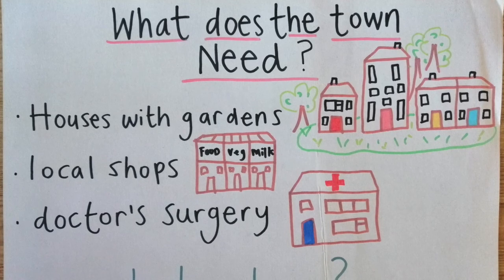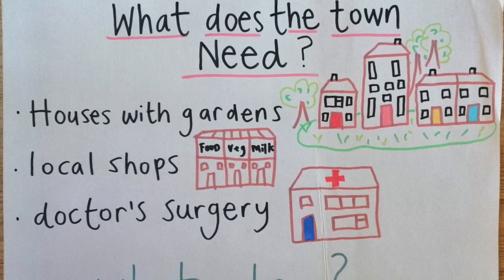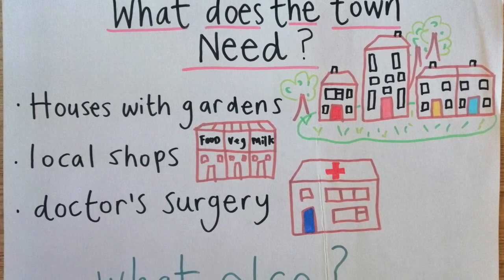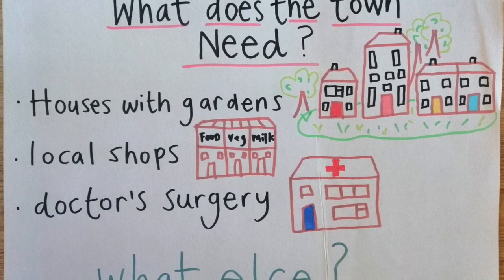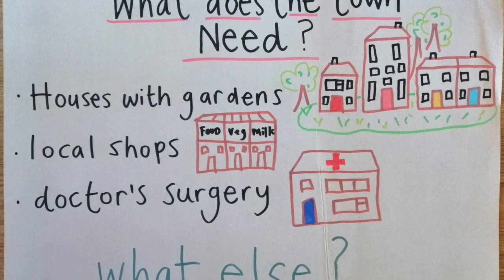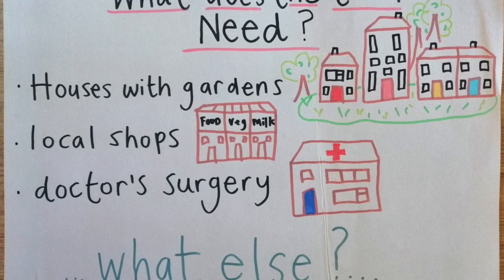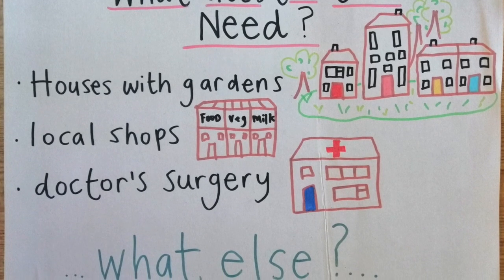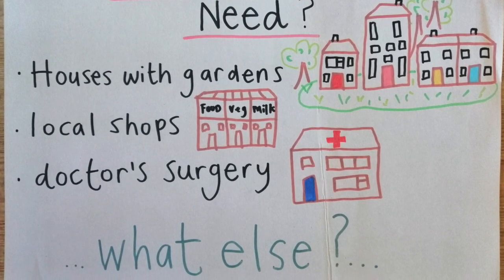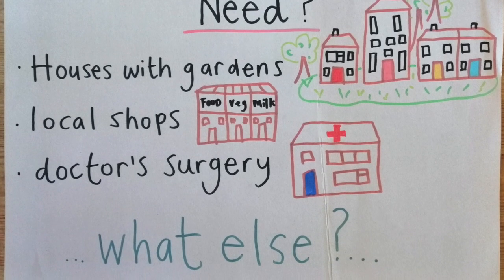Let's make a list of the things you need to have in your town. I'm going to start with houses for people to live in, but I'd like them all to have gardens. It would need a doctor's surgery and some local shops. What else would your town need? Think of the things in your town to help you out.